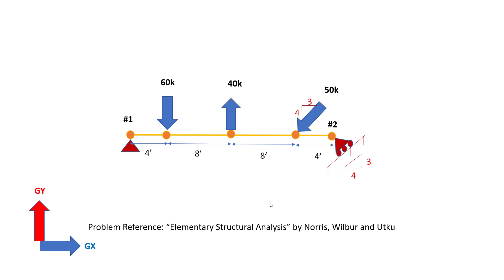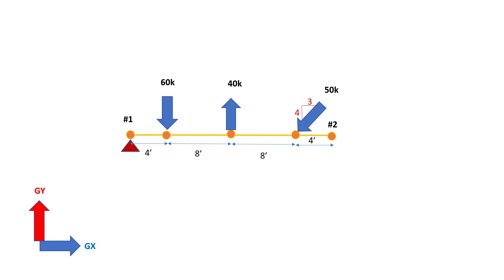To understand how we could define a roller support more clearly, let us, for illustration purposes, remove the depiction of the roller support from node number two, and let us draw a line AA' parallel to the plane which held the roller support. Now let us consider a line dropped perpendicularly from line AA' from node number two, and let us draw a reference point arbitrarily on this perpendicular line to AA'.